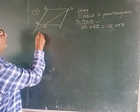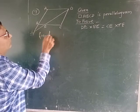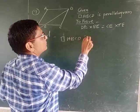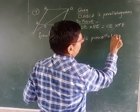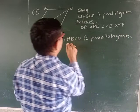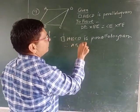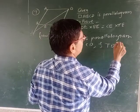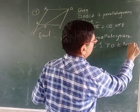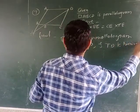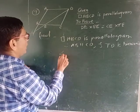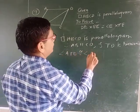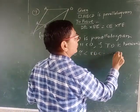Now see, quadrilateral ABCD is a parallelogram. Therefore, AB is parallel to CD and TD is transversal. Therefore, angle ATD is congruent to angle TDC, alternate angles.